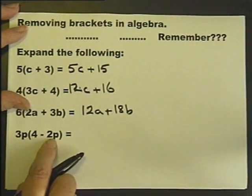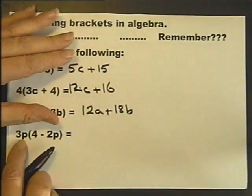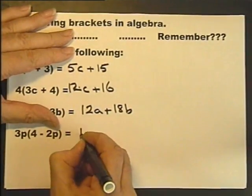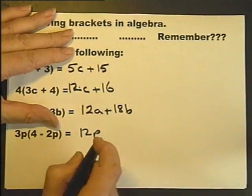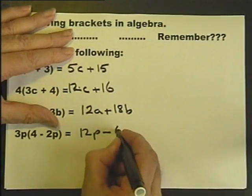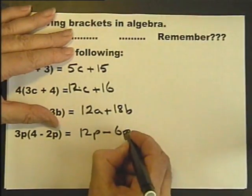Multiply both these by that 3P. 3P times 4 is 12P. And 3P times minus 2P is minus 6P times P, P squared.